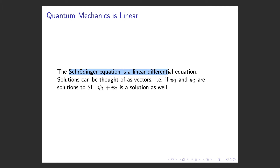The Schrödinger equation is a linear differential equation. So if you have one solution psi 1 and another solution psi 2, then psi 1 plus psi 2 is a solution as well. You can sense the linearity in quantum mechanics, and this is why linear algebra can be used in quantum mechanics.